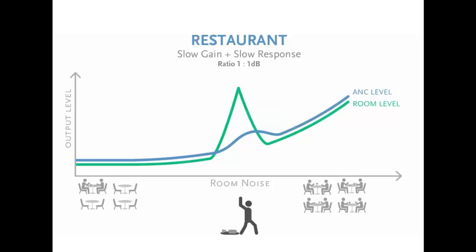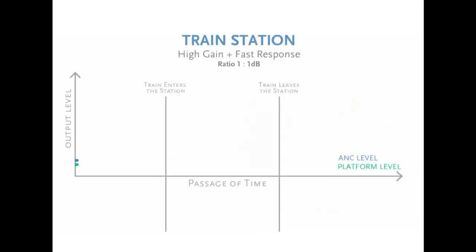However, the system output level will still increase over an extended period of time of ambient noise. In contrast to the last two examples, ANC in a train station requires a very quick response when a train enters or leaves the station.